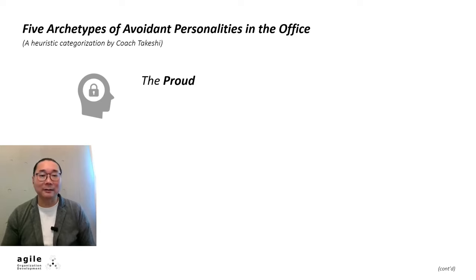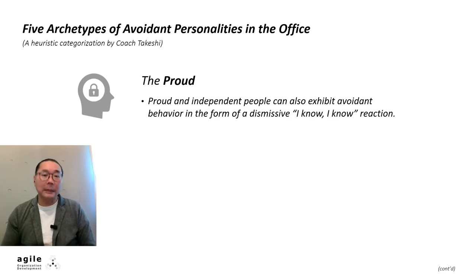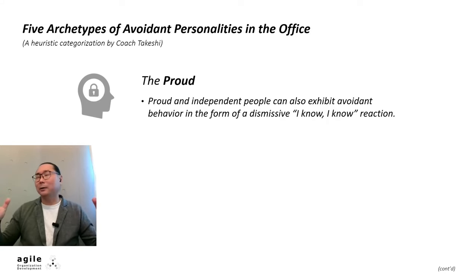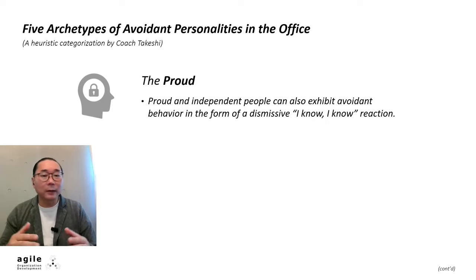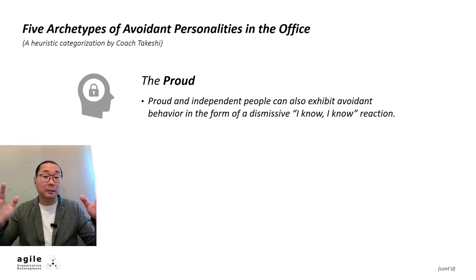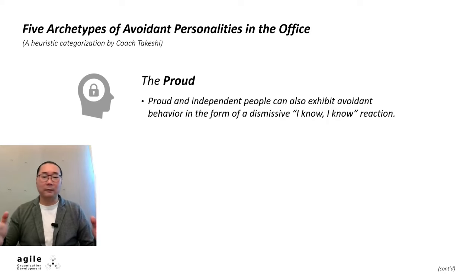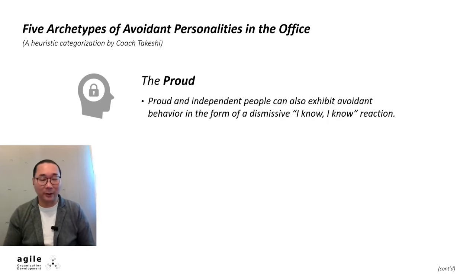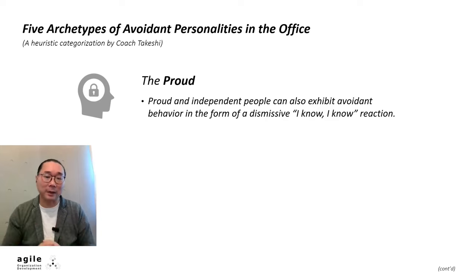Let's talk about the proud. Proud and independent people can also exhibit avoidant behavior in the form of a dismissive "I know, I know" reaction. You might feel like you're hitting a wall when you try to offer advice, suggestions, feedback, or constructive criticism. They might interrupt and downplay the importance of feedback with comments like "okay, okay, big deal." Some may abruptly change the topic. You might get a verbal agreement like "sure, sure," but we sense selective hearing and feigning of agreement — their actions later suggest they're not following through.